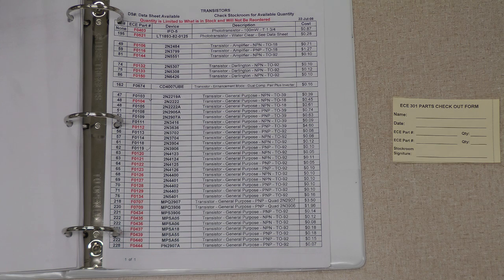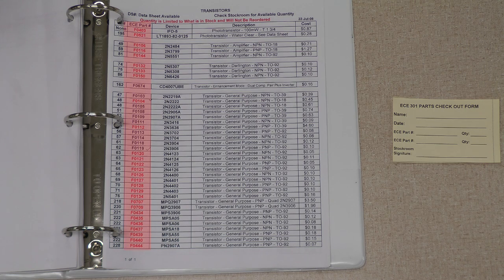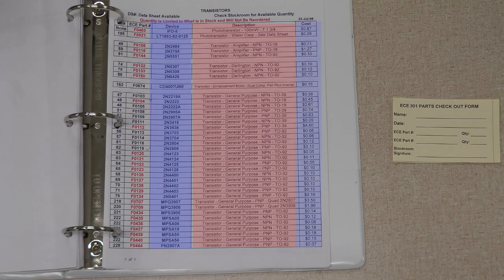Within the ECE parts list, you'll find the ECE part number, the device description and name, and the cost per part.